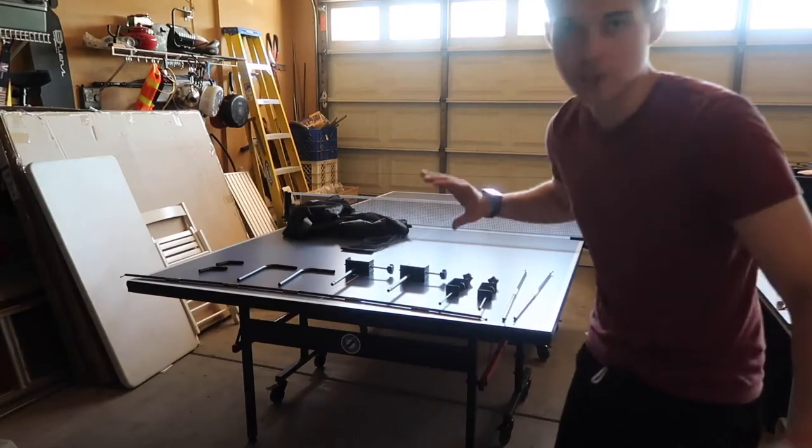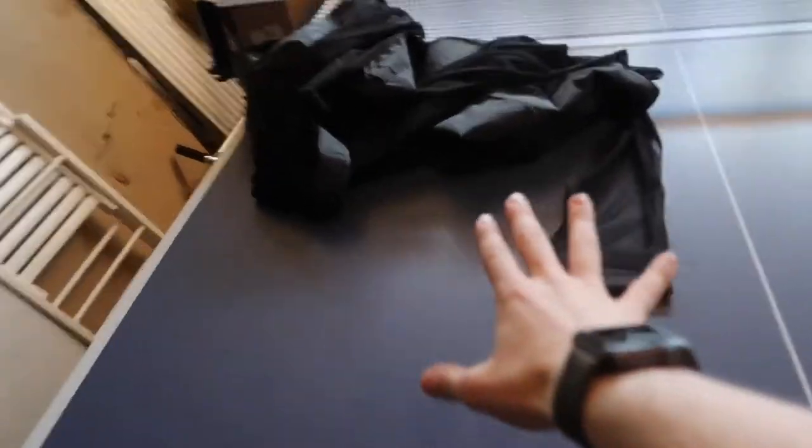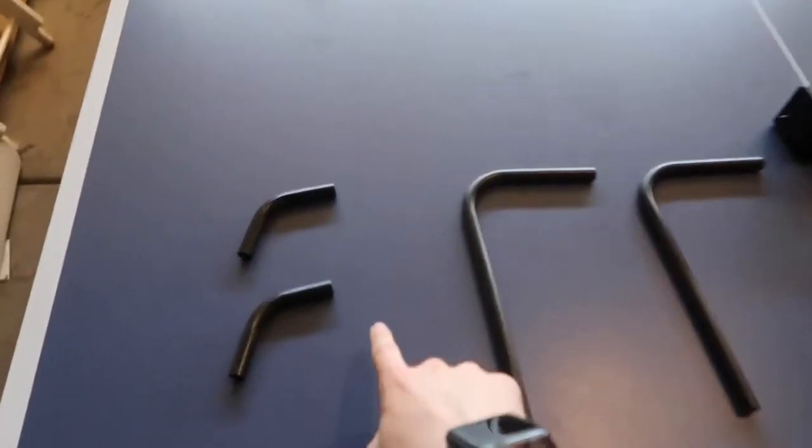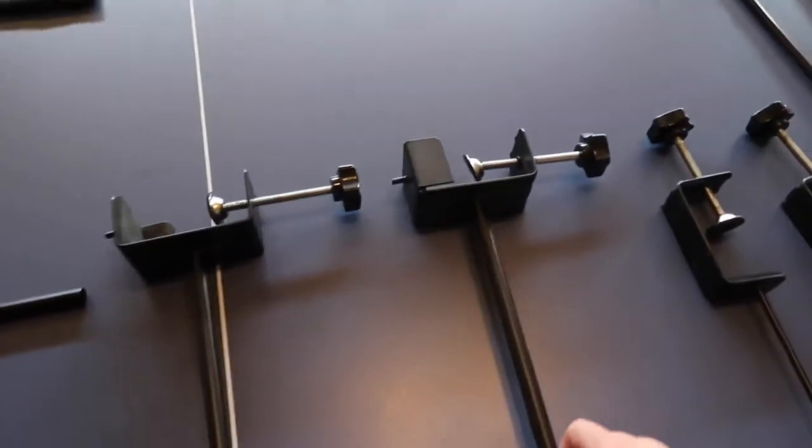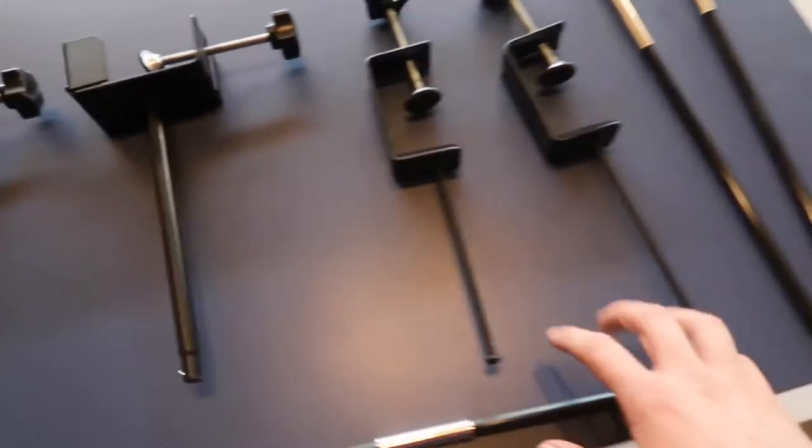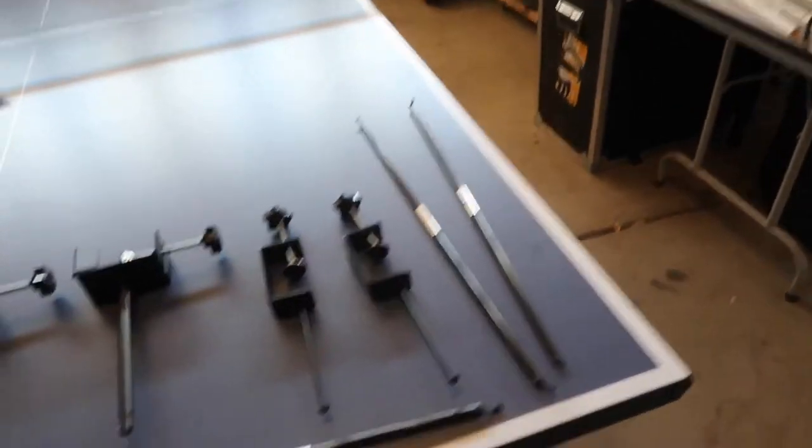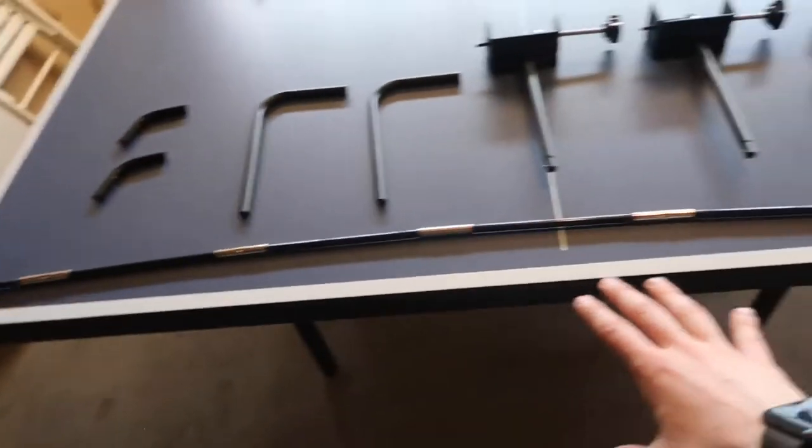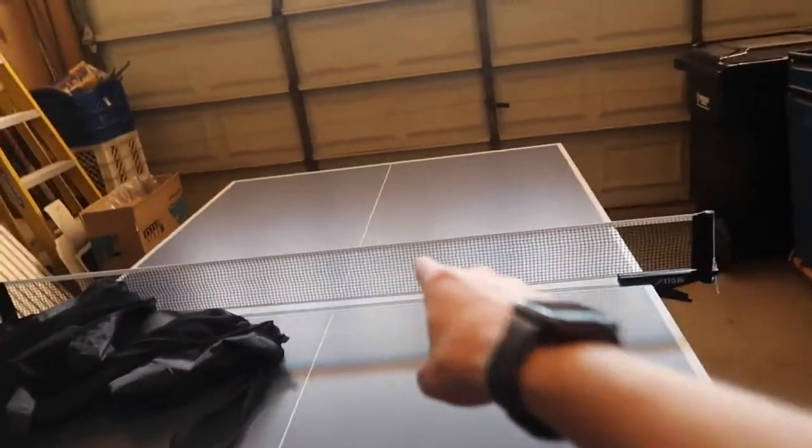Alright, so I took this thing apart just so I could show you guys how to put it all back together. What you should have is the net, two corner brackets, longer corner brackets, two table brackets, two of these longish sticks, and one huge long stick that's going to go in the very back of the net. Let's set it up on that side.